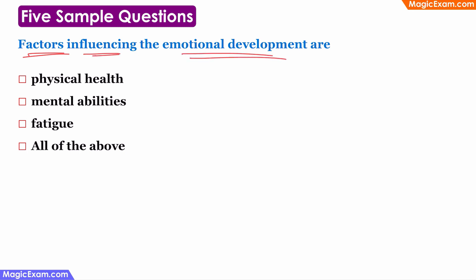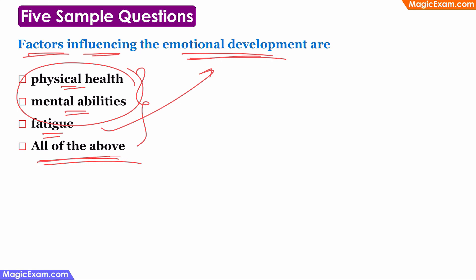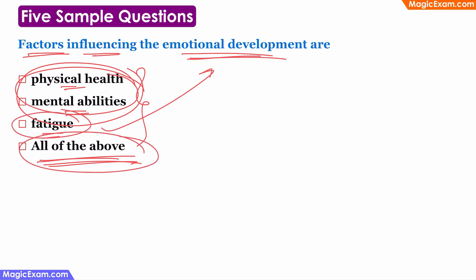The next question asks which factors influence emotional development. This can be answered using common sense. If a child is physically not healthy, the child will feel very depressed and sad, so emotional development is impacted by physical health. If the child is not mentally developing, mental development also becomes affected and impacts emotional development. And if the child has fatigue — is always tired due to health or other reasons — the child cannot focus on emotional development. Therefore, all of these are factors which influence emotional development, and the correct answer is 'all of the above.' When you see multiple options and can identify that at least two of them are factors, and there is no 'two of the above' option, the answer has to be 'all of the above.'